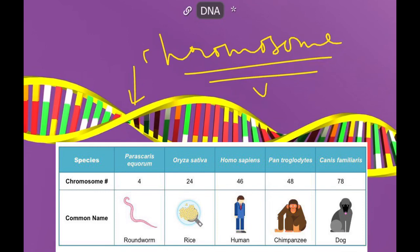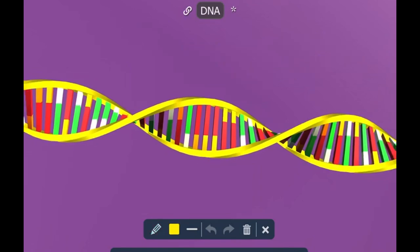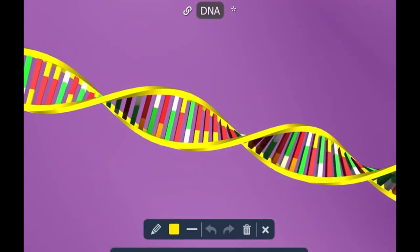Okay, this is one very important thing. Every organism of a particular species has a fixed number of chromosomes, and each cell in an organism has the same number of chromosomes. This is what is very important you need to remember. However, the number of chromosomes in a cell is different for different species.